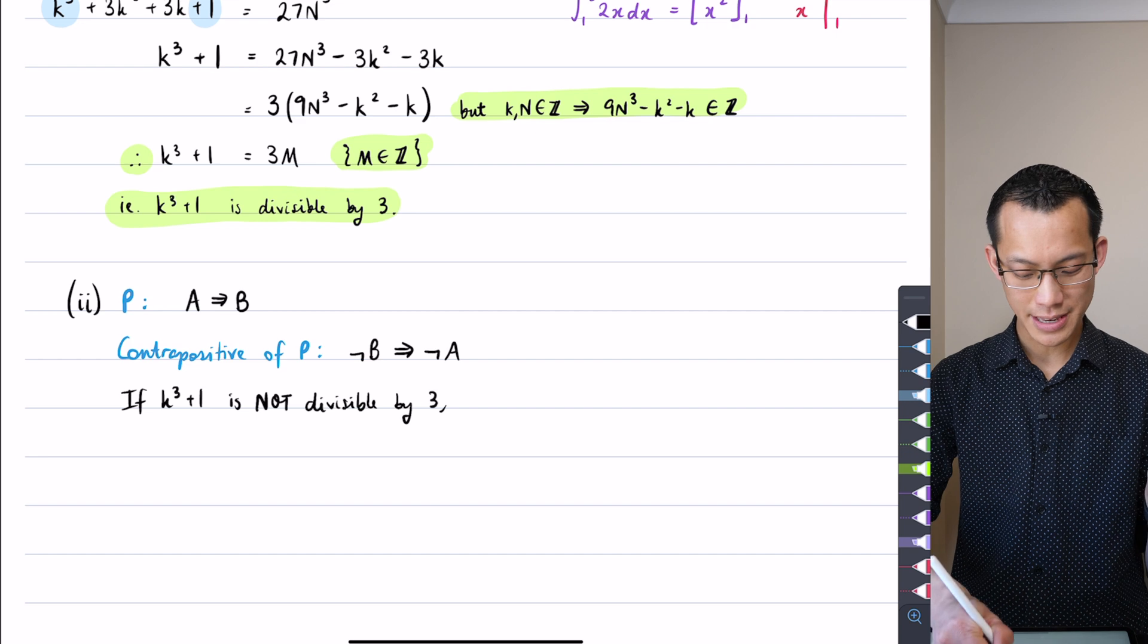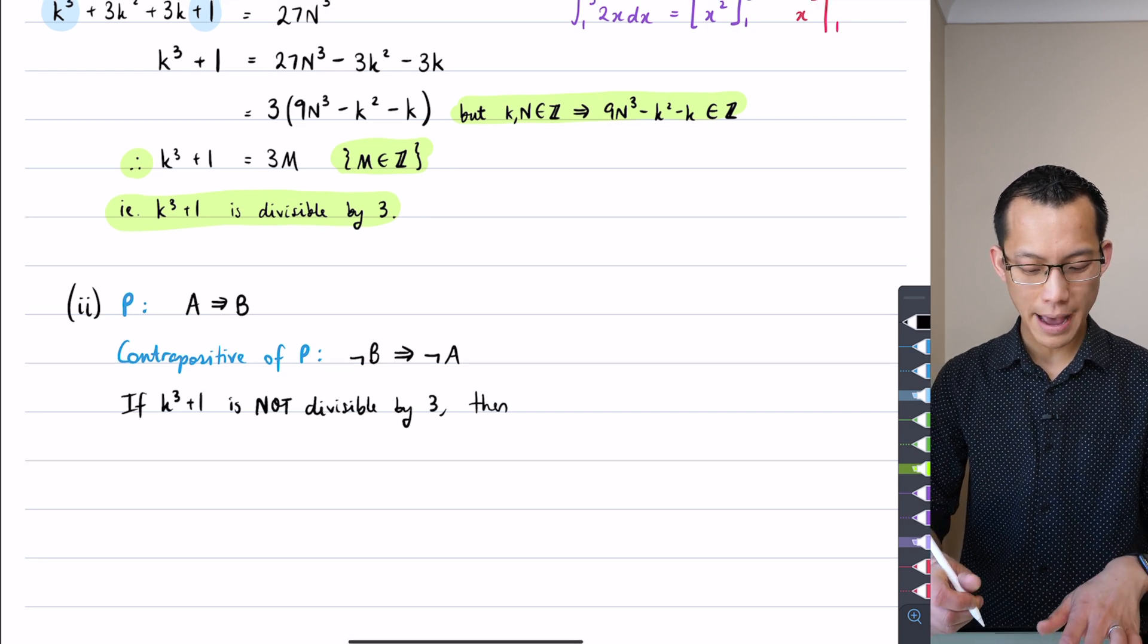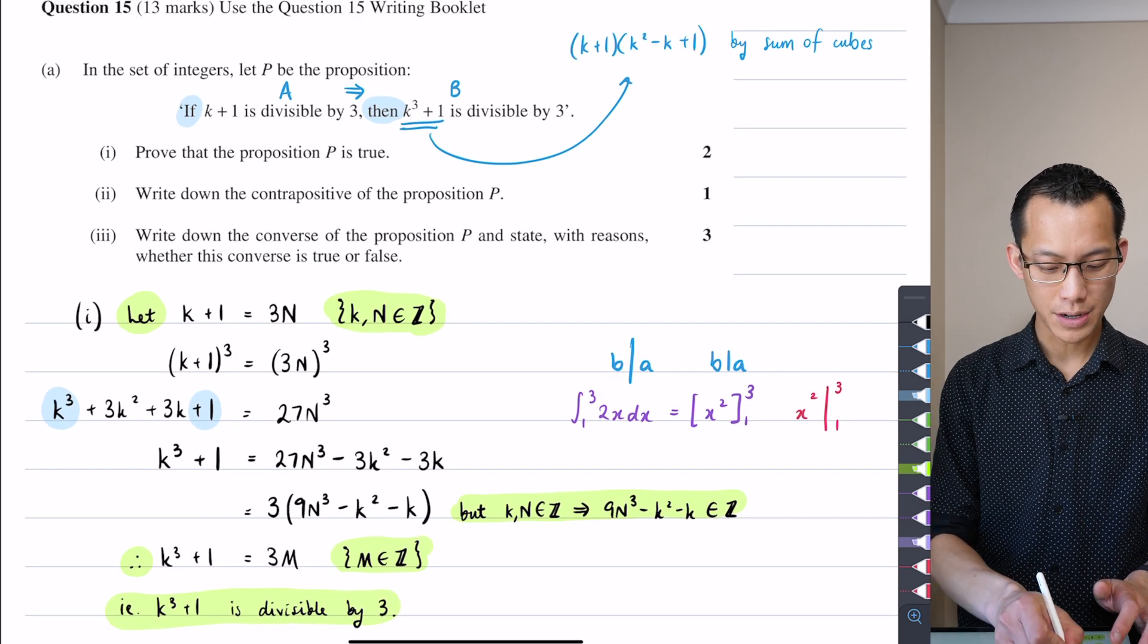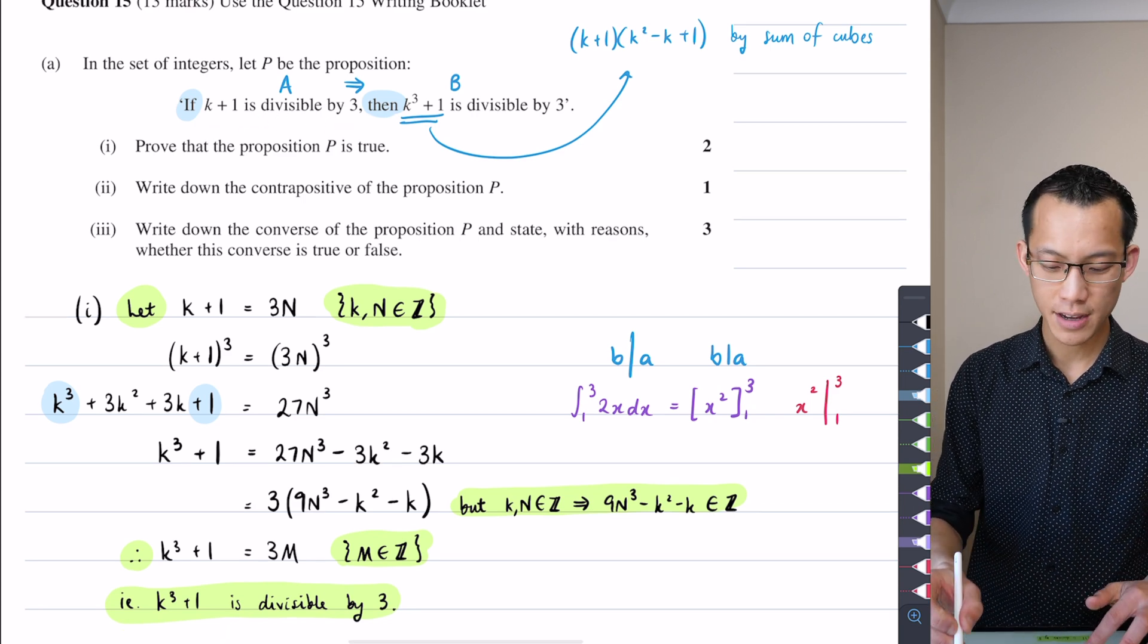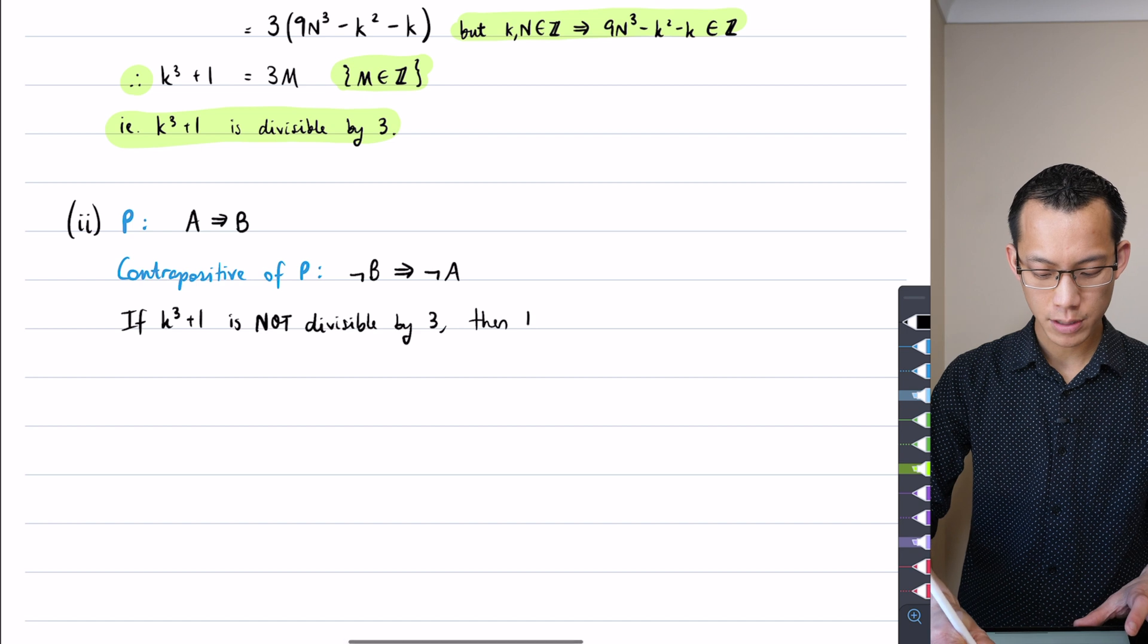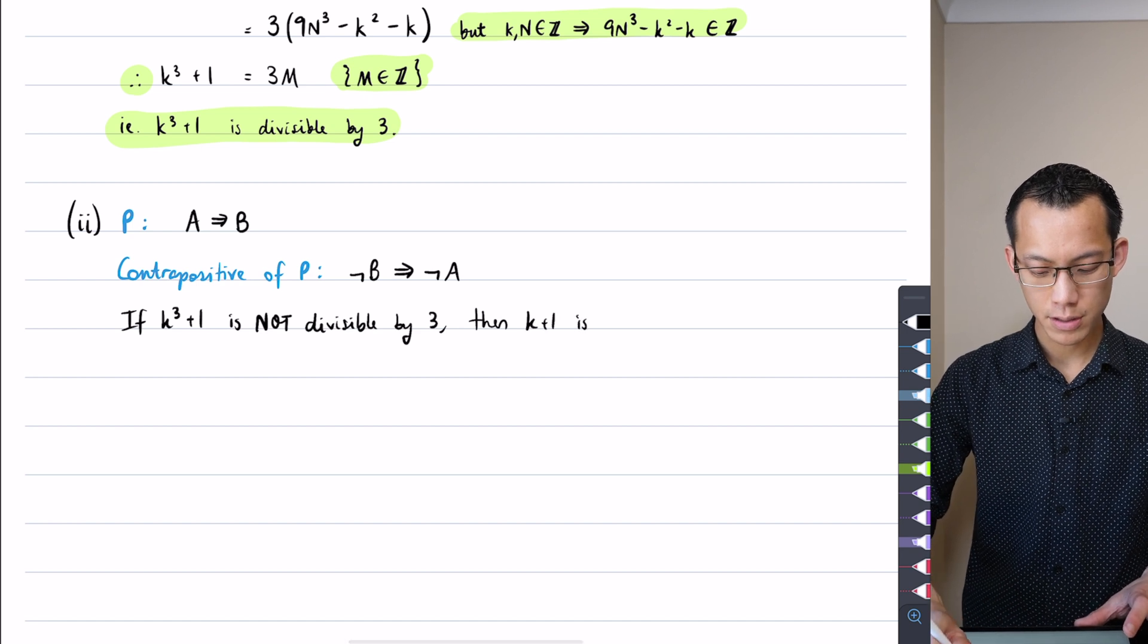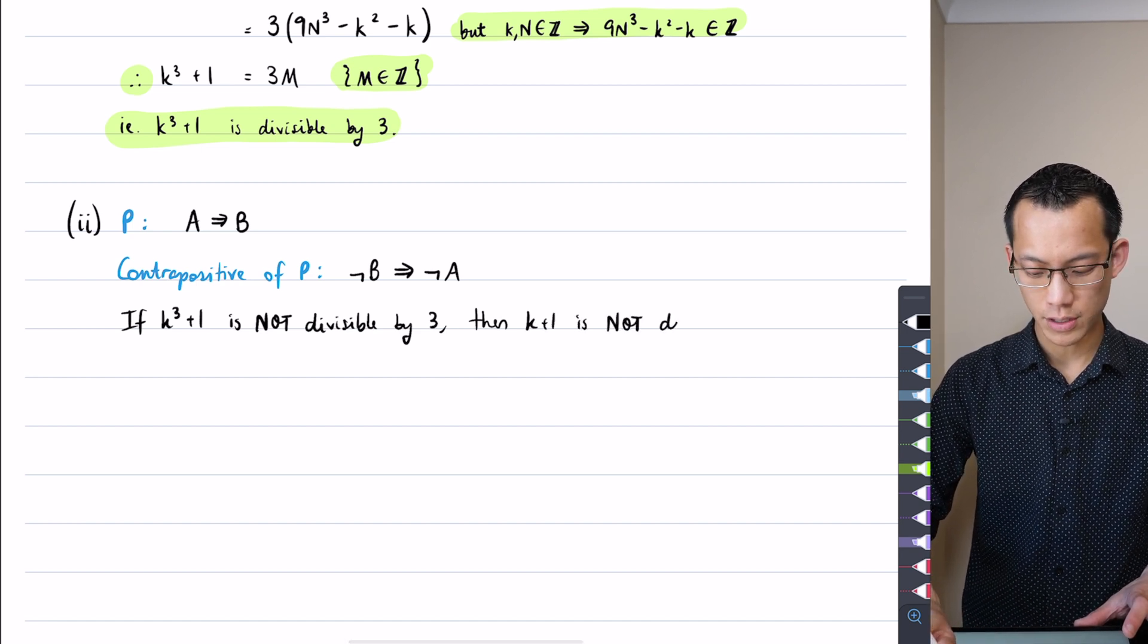I'm now going to imply, so I say 'then', and I look back at my A statement. So I want not A, so I'm just going to say 'k+1 is also not divisible by 3.'